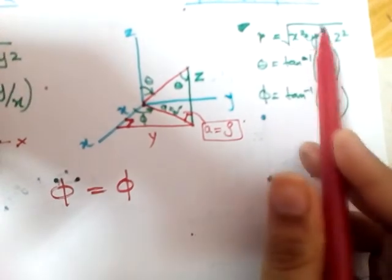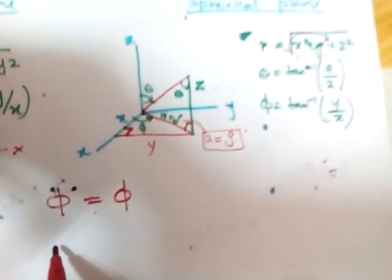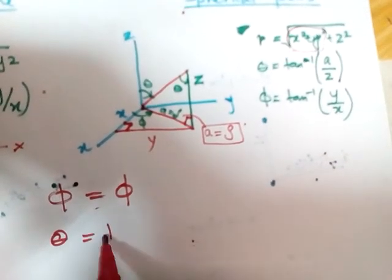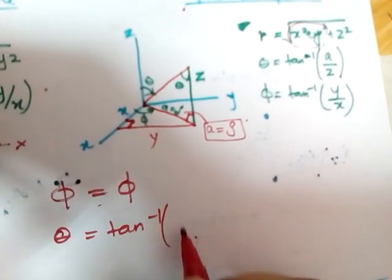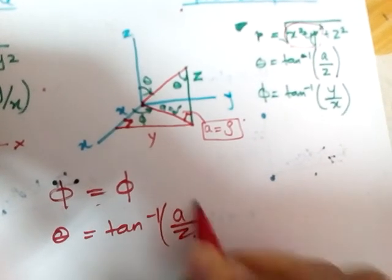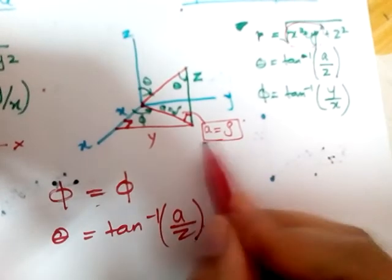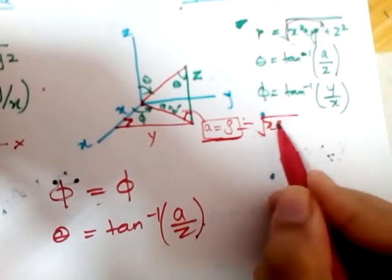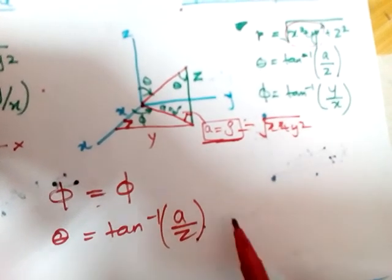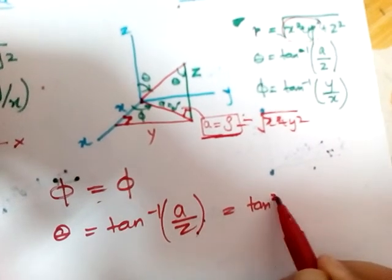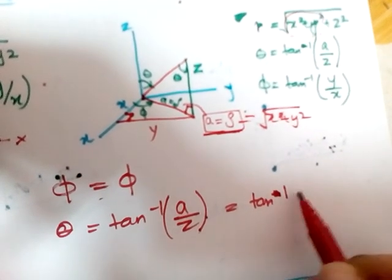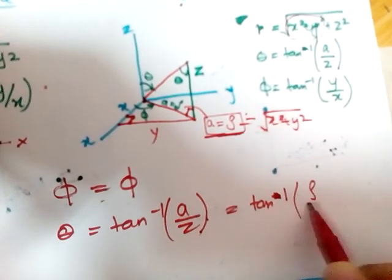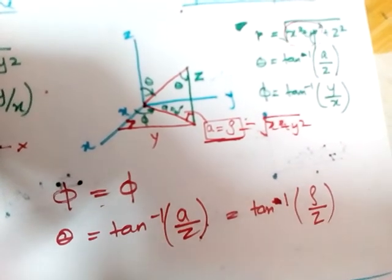So let's just write that in here. So starting with theta, theta is equals to tan inverse a by z, right? Since we know a is equals to rho, that is equals to tan inverse, why do I keep writing tan square, tan inverse rho by z.